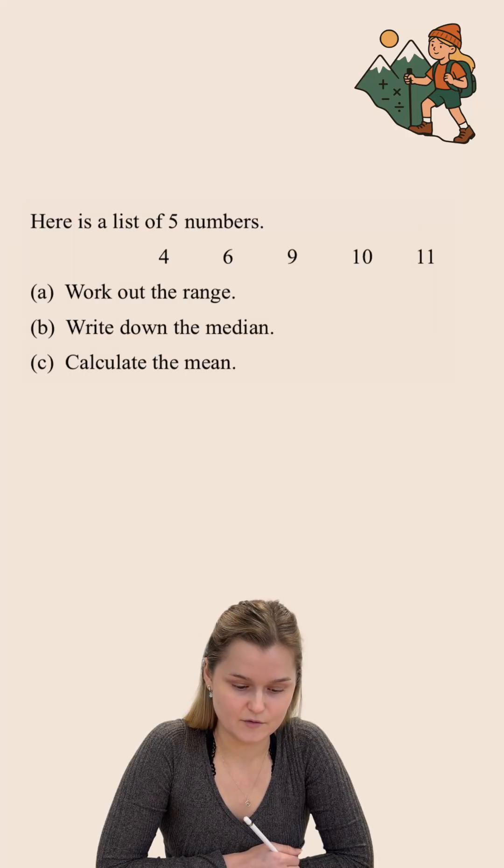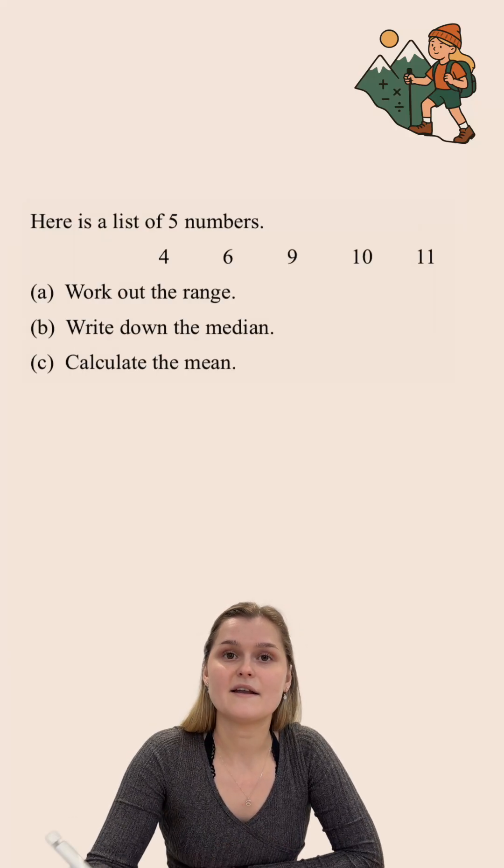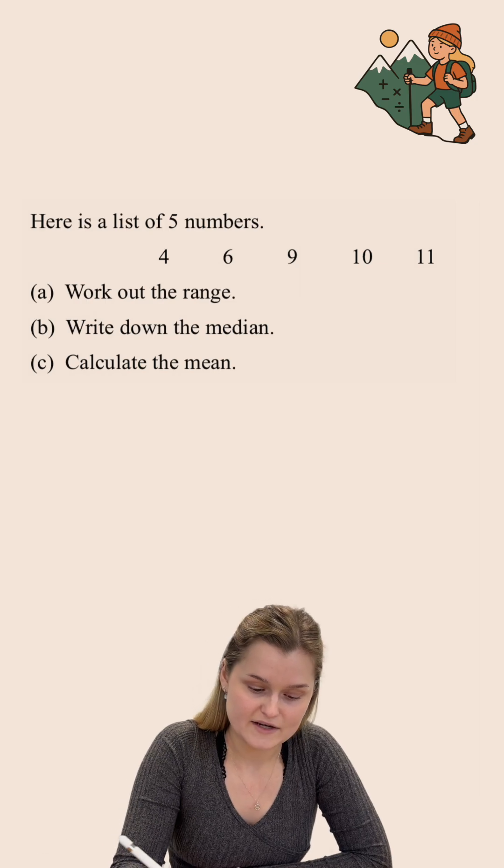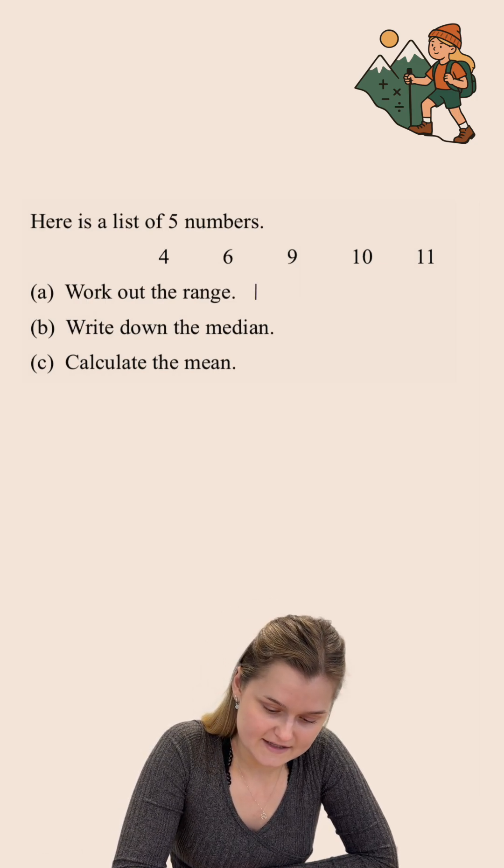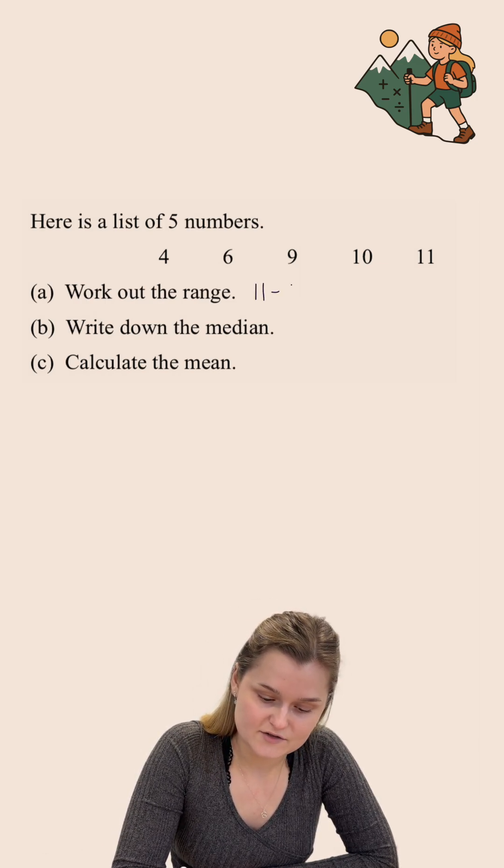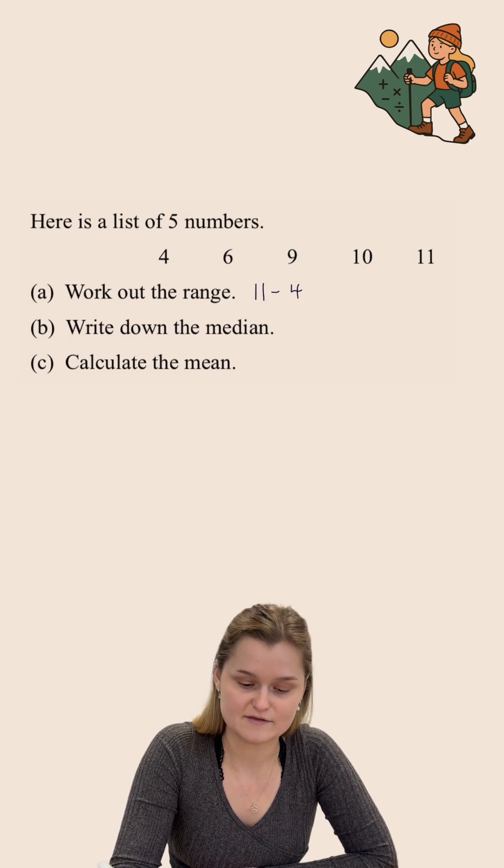Here is a list of five numbers. Work out the range. To calculate the range of a set of data, we do the largest number, which in this case is 11, and we subtract the smallest number, which in this case is 4.